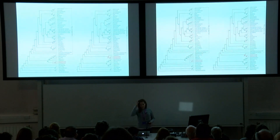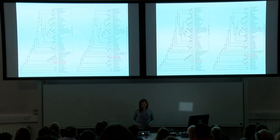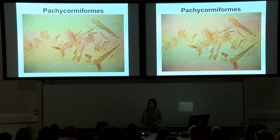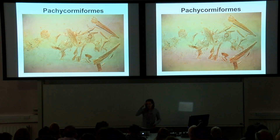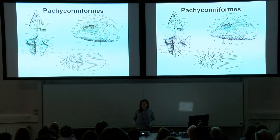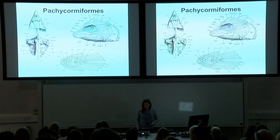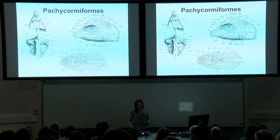Despite having all this information about pachycomiforms, we actually don't know much about their interrelationships, and there's been some dispute over their placement relative to their sister taxa. This is generally because the fossils are quite incomplete or completely disarticulated or flattened, which means our inferences are pretty much limited to easily observable external features rather than the important complex internal features such as the brain case and the gill skeleton — which can tell us a lot about ecology and phylogeny, but are sadly generally hidden.